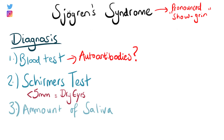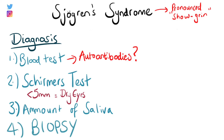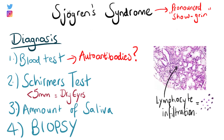The amount of saliva is also measured to see if saliva production is normal. An x-ray can be done to rule out blockage of a salivary duct with a stone or calculi, which is one of the differential diagnoses. Additionally, a biopsy can be taken of one of the glands to check for the presence of white blood cell infiltrate, which suggests inflammation.